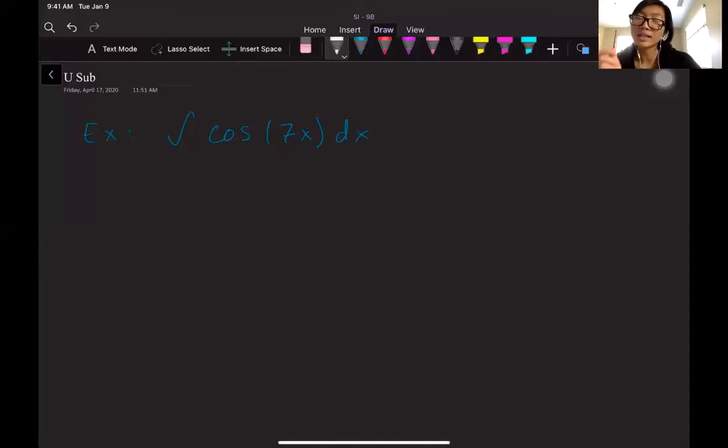u. That 7x is giving me a problem, so I'm gonna let u be equal to 7x. Next thing I need to do is I need to take a derivative. This is where I want to tweak a little bit. We're used to derivatives as u prime, but I'm gonna write